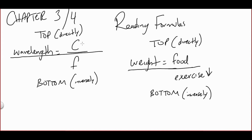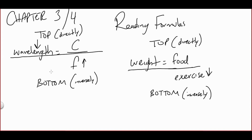If my propagation speed goes up, so does my wavelength; or if my propagation speed goes down, so does my wavelength. They're both on top, so they're directly related. The bottom one is inversely related, so if my frequency goes up my wavelength would have to go down — it gets smaller, slimmer. Or if my frequency goes down, my wavelength would have to go up. Formulas are there to give you the relationship — that's it, there's really no math involved.